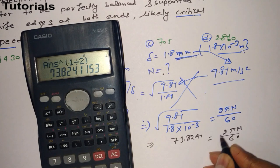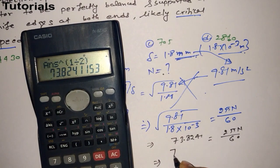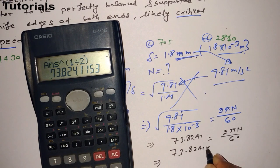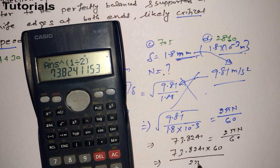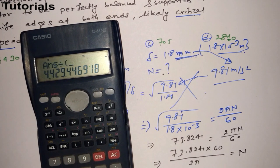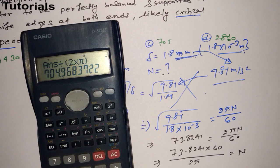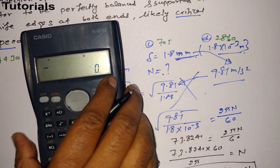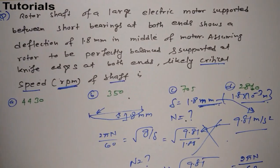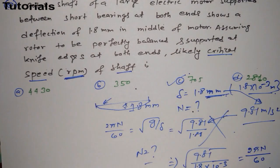Now we do cross multiplication: N = 73.8241 × 60 divided by 2π, which gives N = 704.96 RPM. Checking the answer options, the correct answer is option C.